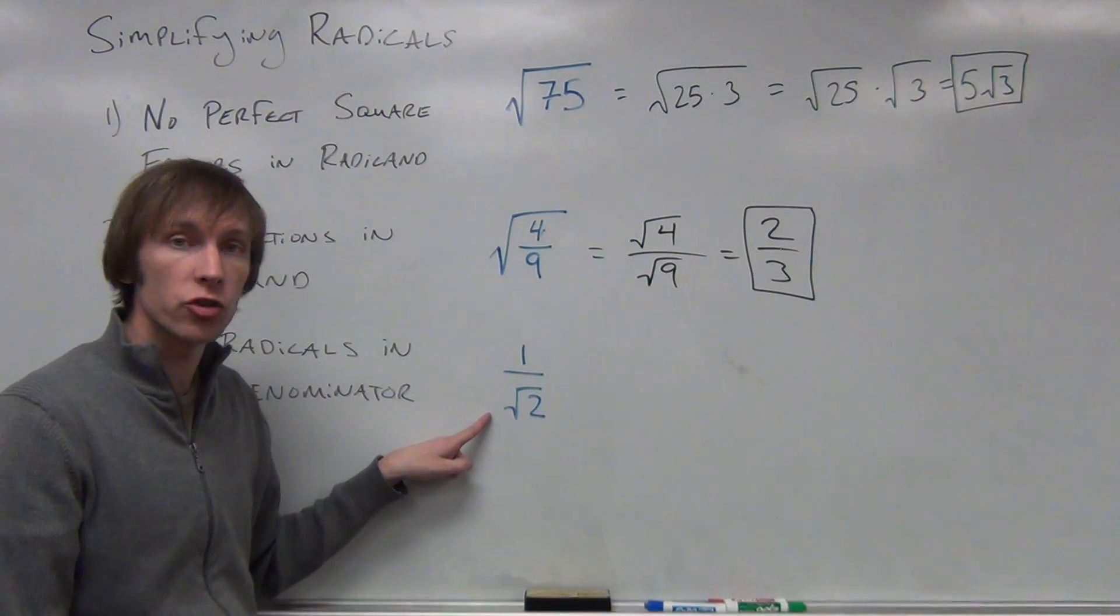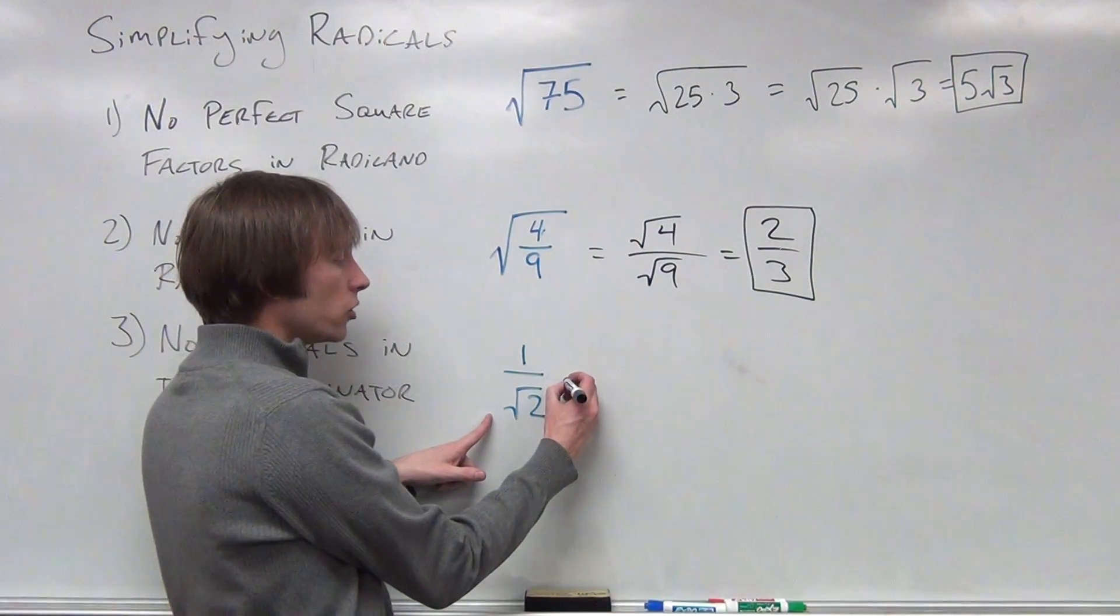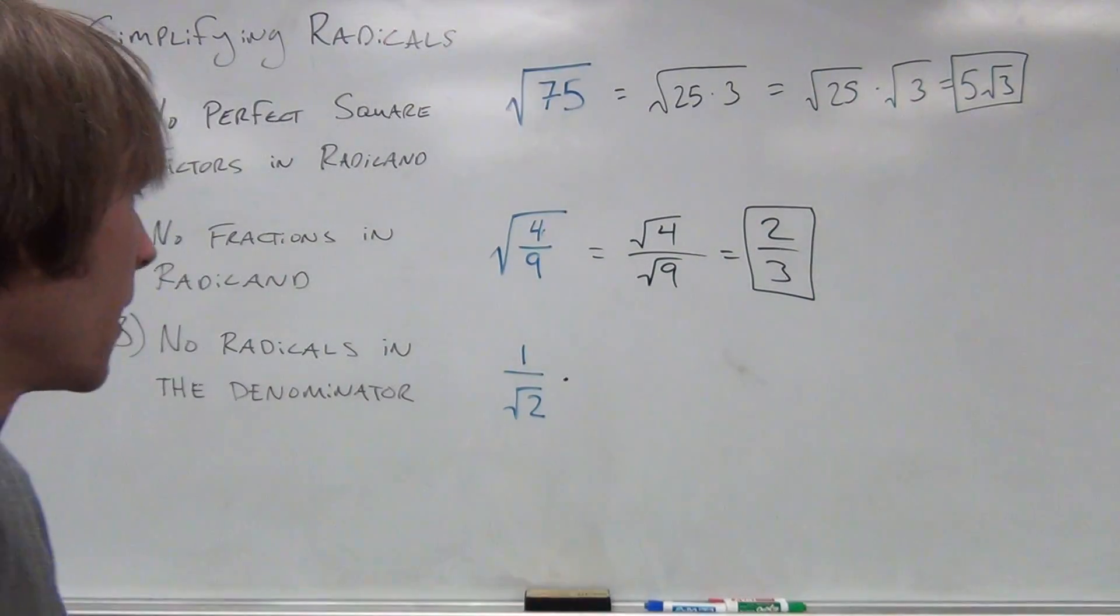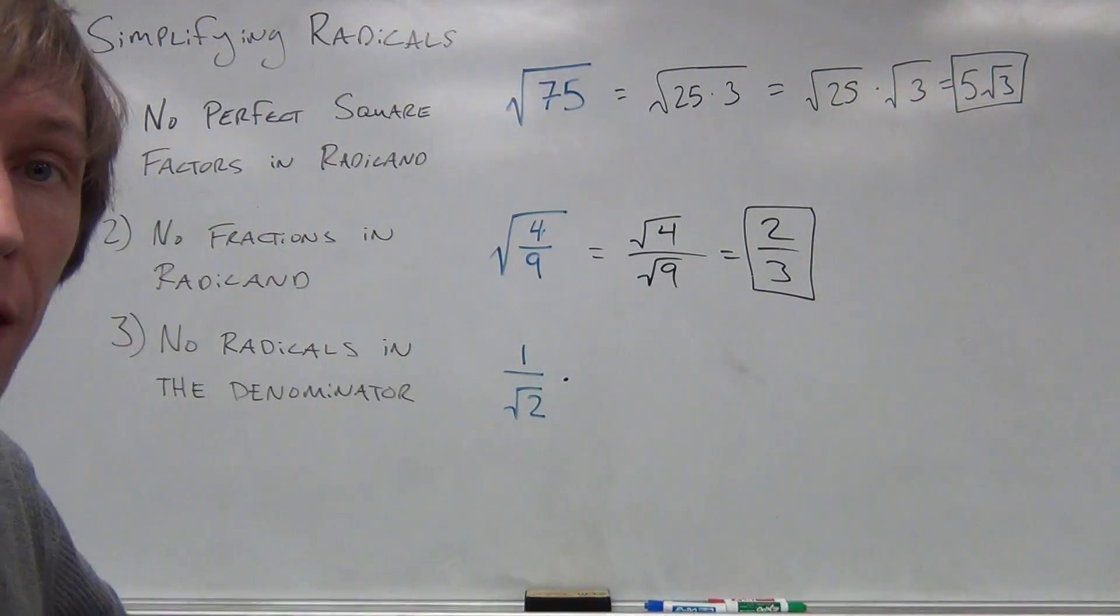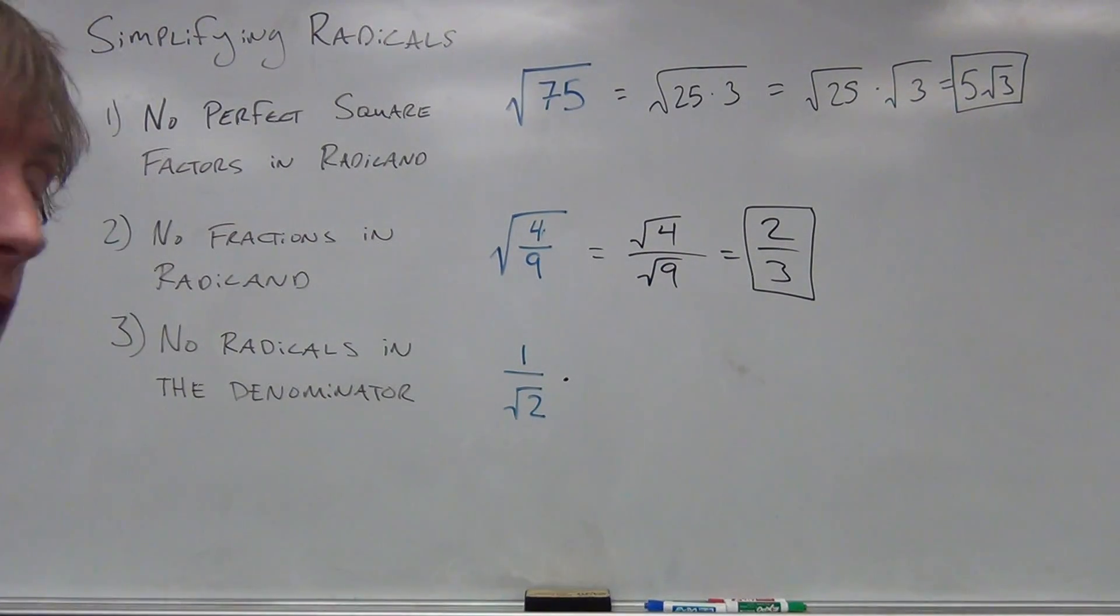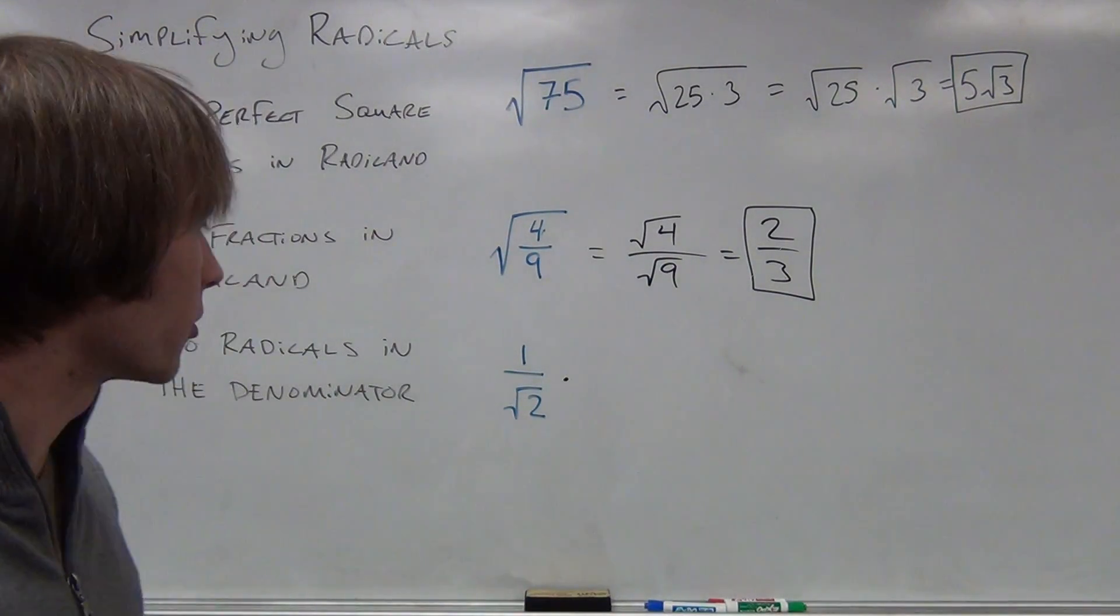Yikes, we've got 1 over the square root of 2. Here's how I'm going to do this. I'm going to rationalize the denominator. That's a fancy phrase to say, I want my denominator to be a rational number. I can't have a denominator that's an irrational number, so let me rewrite this.